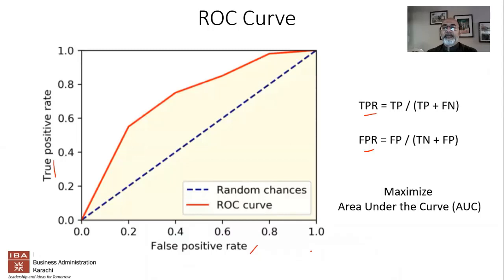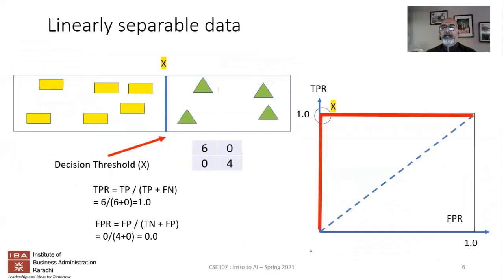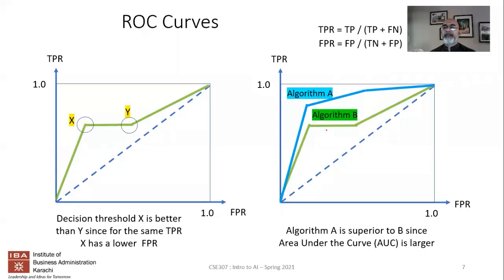Last time we spoke about the ROC curve — the receiver operating characteristics curve — in quite a lot of detail. We looked at how it operates and compared different algorithms. By comparing the area under the curve, you can get a good idea of which algorithm is better or worse. Looking at individual operating points based on individual decision thresholds lets you decide between them. On the left was a comparison of individual operating points; on the right, a comparison of complete algorithms. Both can be used to determine different objectives.